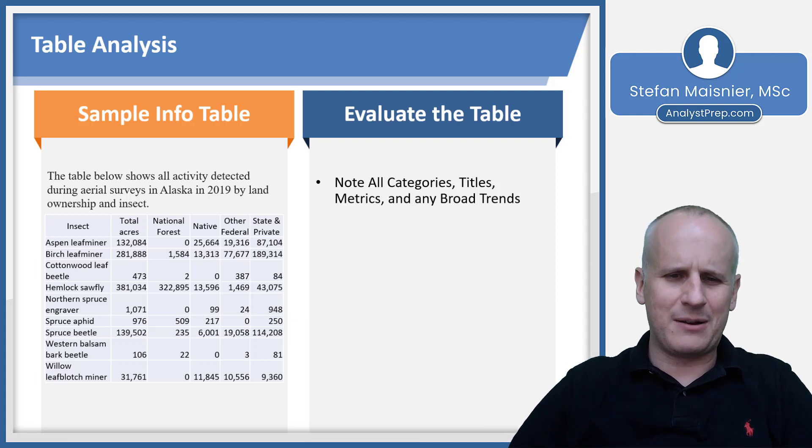And we read at the beginning, we see that the table below shows all activity detected during aerial surveys in Alaska in 2019 by land ownership and insect. So we've got the insects, we've got the total acres, and it apparently shows that the national forest, native, other federal and state and private are the categories of ownership.